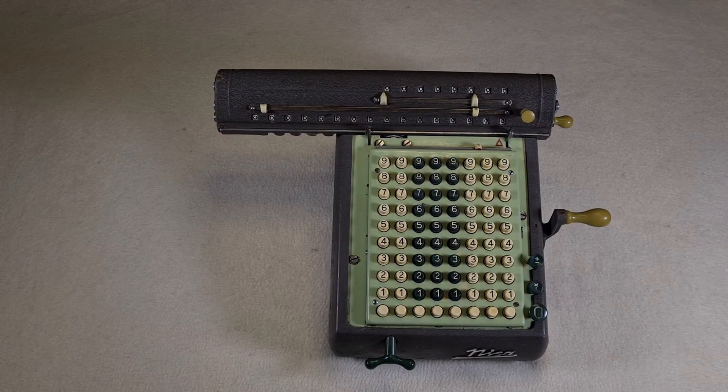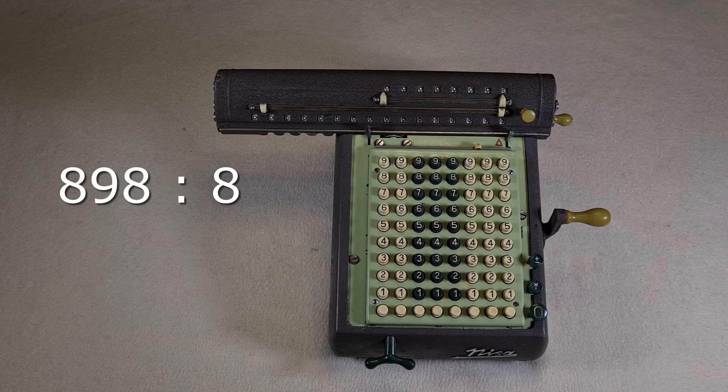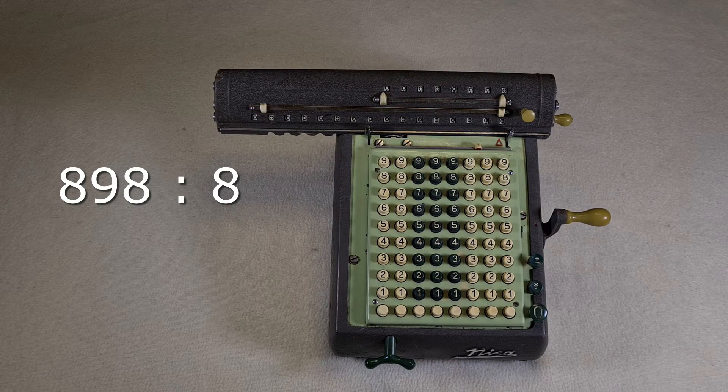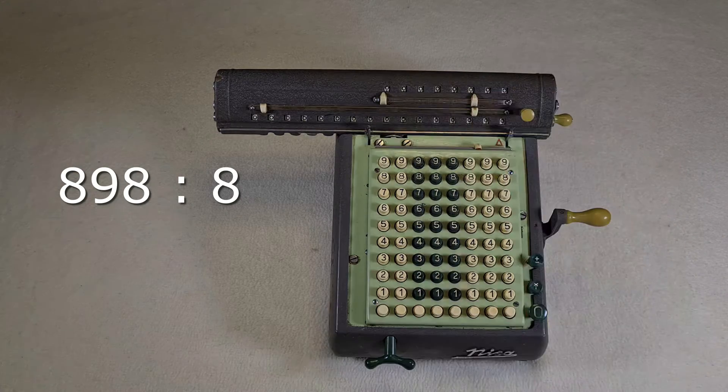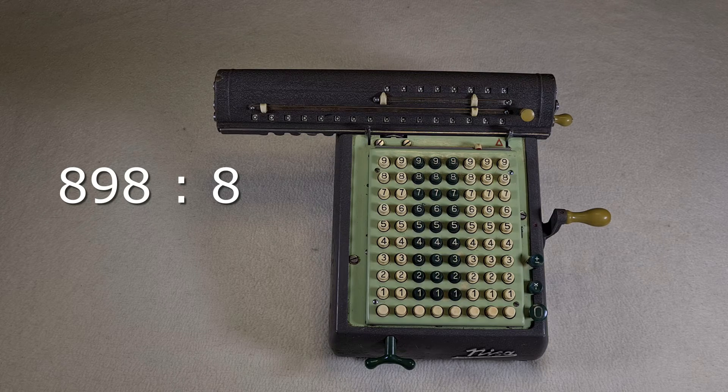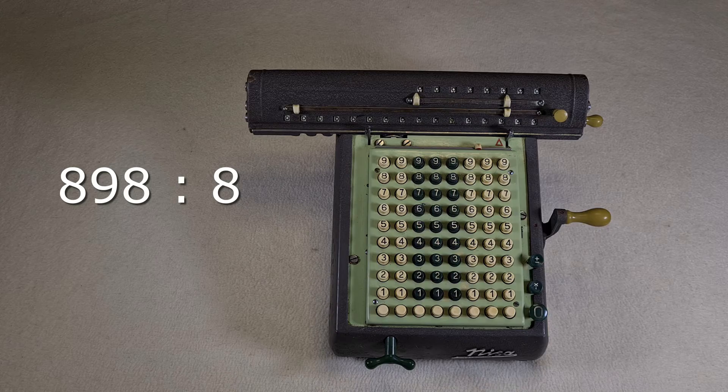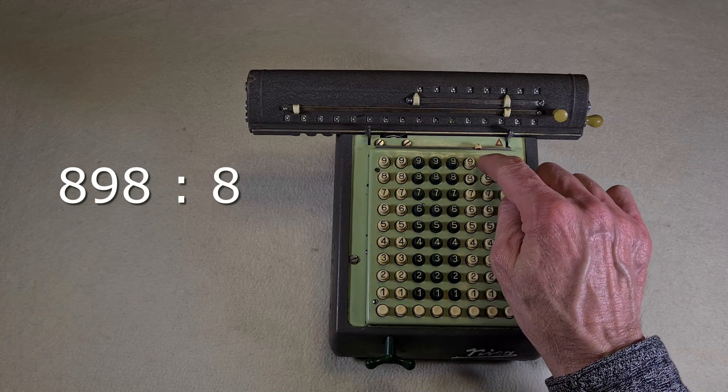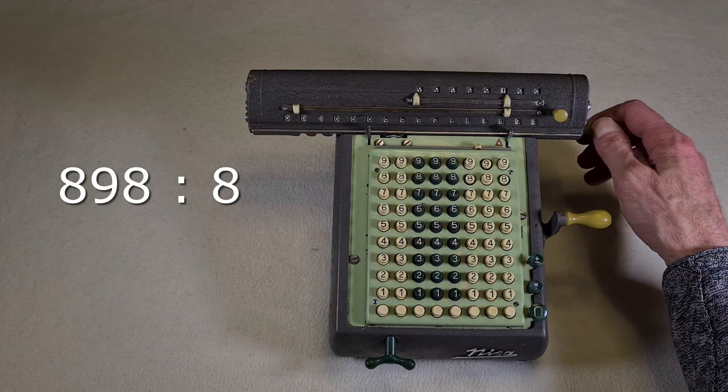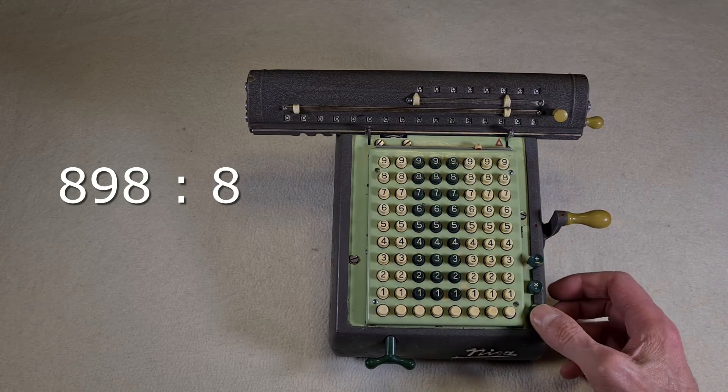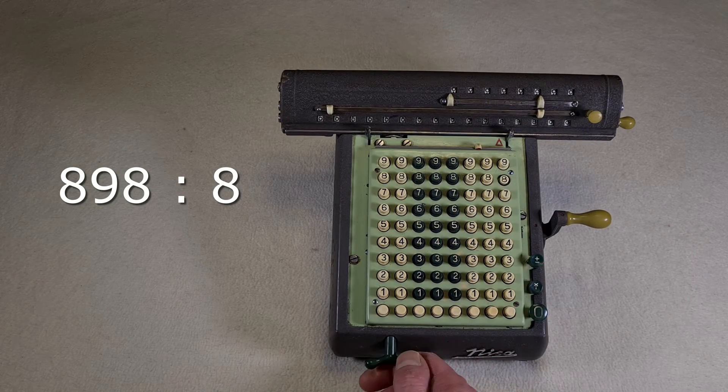You can also do division requiring the use of the decimal point. Let's say 898 divided by 8. I want two decimals, so I set the decimal position here. I move the carriage of the calculator and set the dividend 898. I turn the crank and reset counter and keyboard. I set the divisor 8 and I move the carriage.